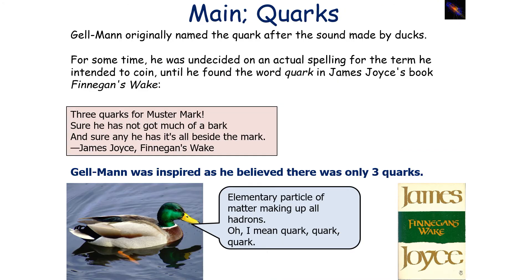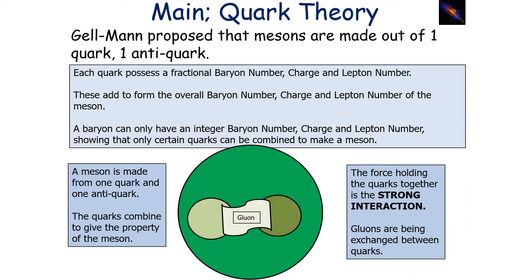Gell-Mann originally named the quark after the sound made by ducks, but for some time he was undecided on the actual spelling for the term he intended to coin, until he found the word quark in James Joyce's book Finnegan's Wake, where it says 'three quarks will muster mark, sure he's not got much of a bark, and sure any he has, it's all beside the mark.' Gell-Mann was inspired as he believed there were only three quarks.